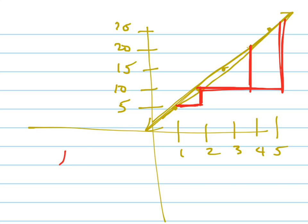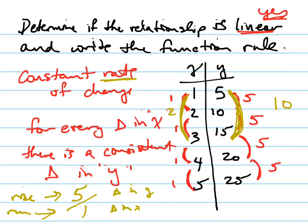But the rate of change, fifteen over three, is the same as five over one, which is just five. Let's try another one. Sorry, before I do another example, let's first write the function rule.